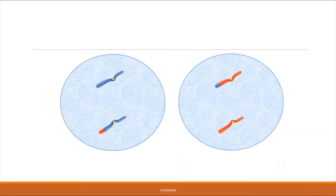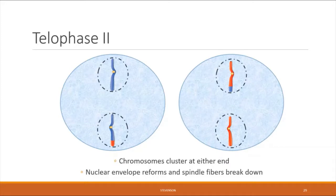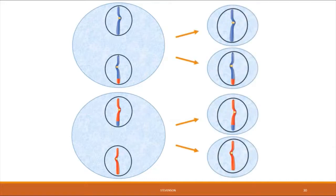In telophase two, the chromosomes cluster at either end of the cell, the nuclear envelope reforms around them, and the spindle fibers are broken down. We are now left with two cells that each have two nuclei, and each of those two cells will undergo cytokinesis — forming a grand total of four cells out of this process.